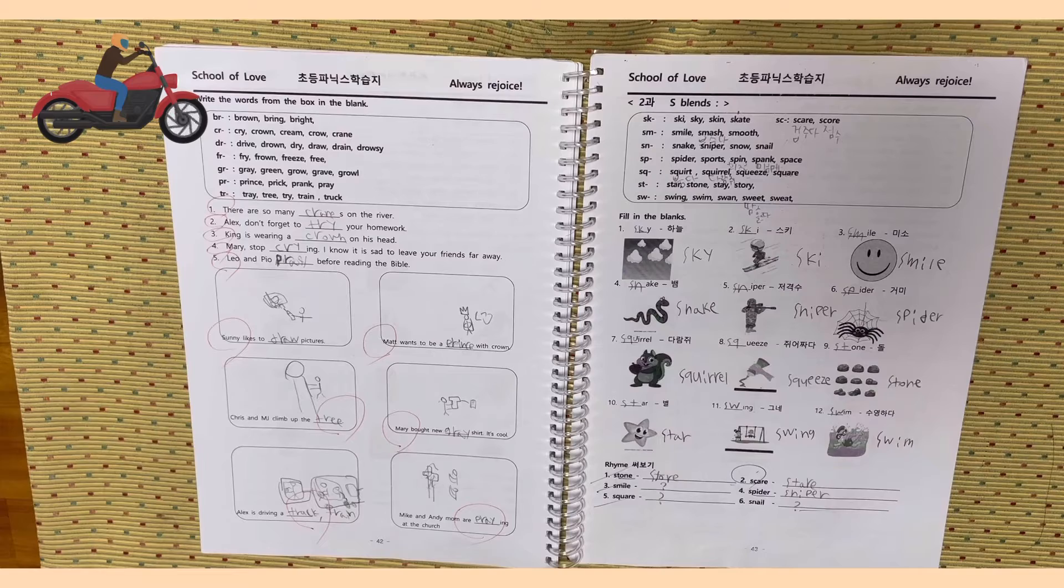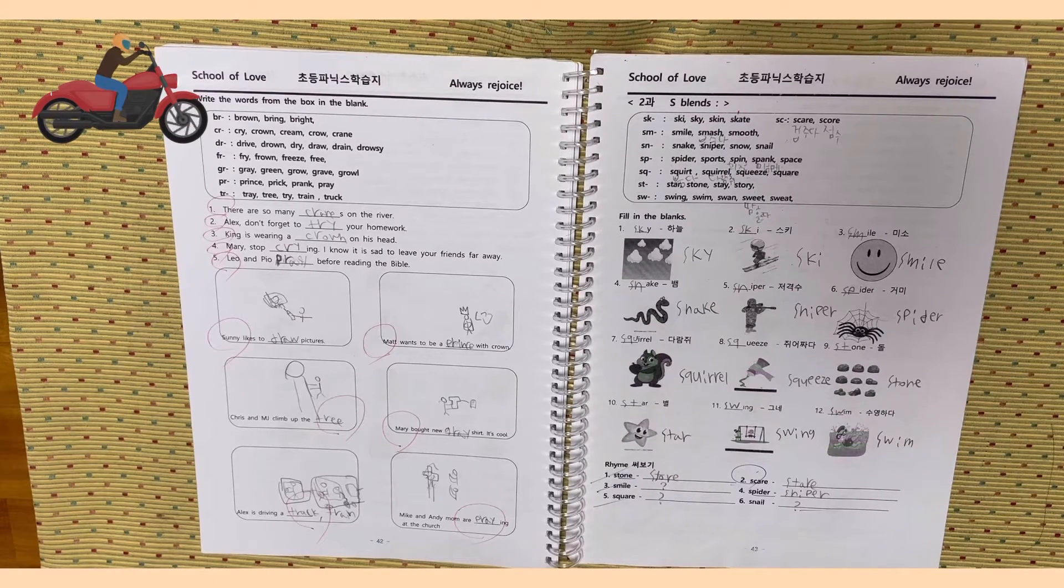Fill in the Blanks. No. 1, Sky. No. 2, Ski. 3, Smile. 4, Snake. 5, Sniper. 6, Spider. 7, Squirrel. 8, Squeeze. 9, Stone. 10, Star. 11, Swing. 12, Swim.